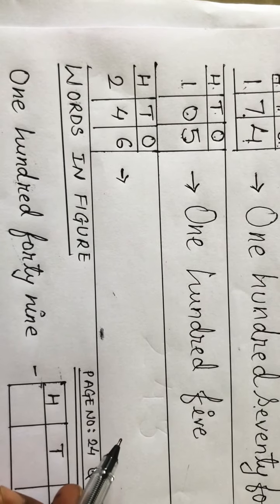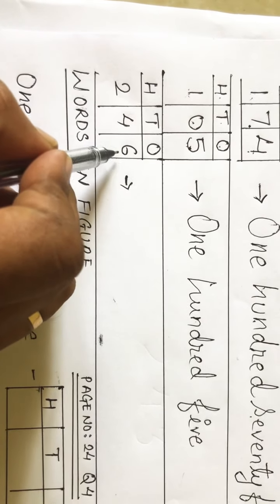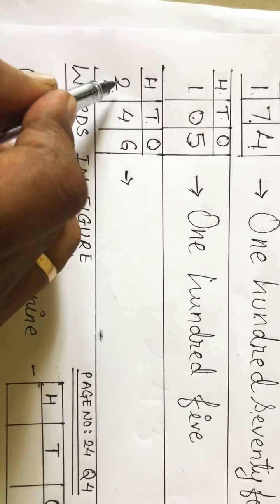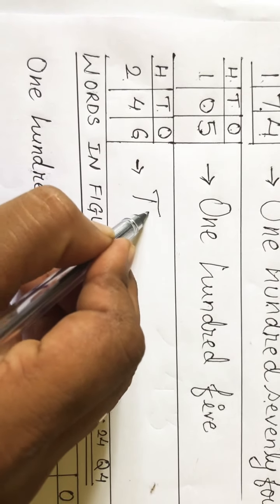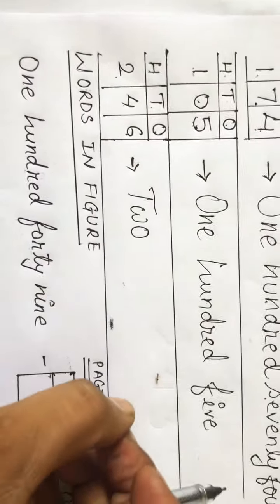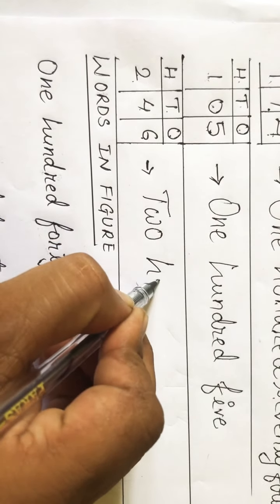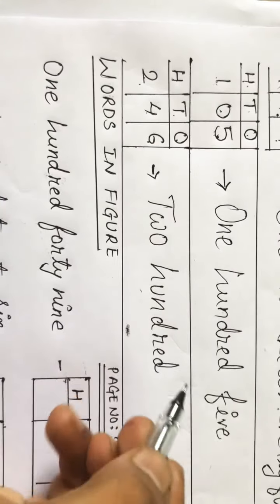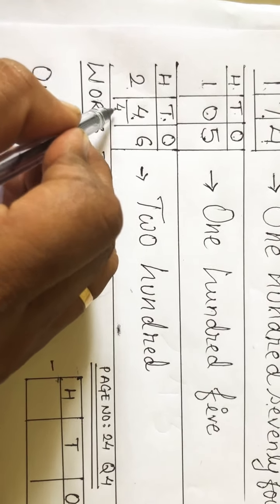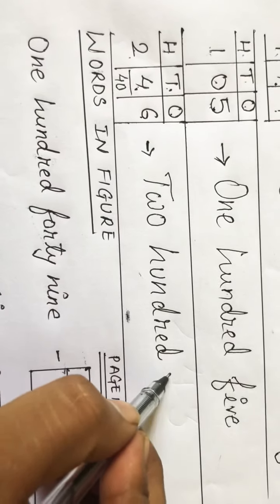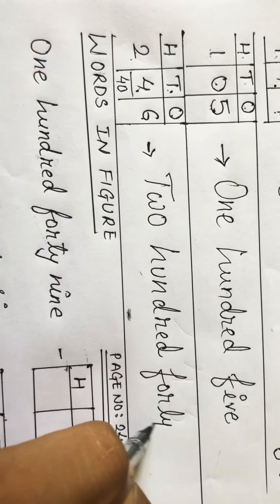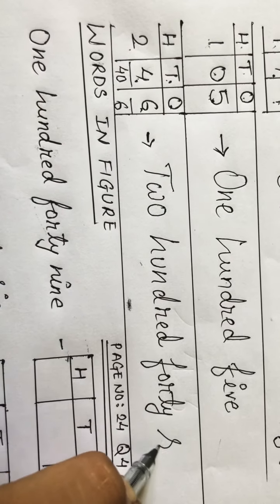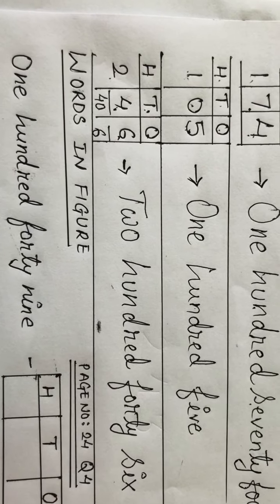Now see the next number: six is at ones place, four is at tens place, and two is at hundreds place. So first we write 'two hundred.' Four is at tens place, so its place value is forty — we write 'forty.' And six is at ones place, so its value is six. Answer: 'two hundred forty six.'